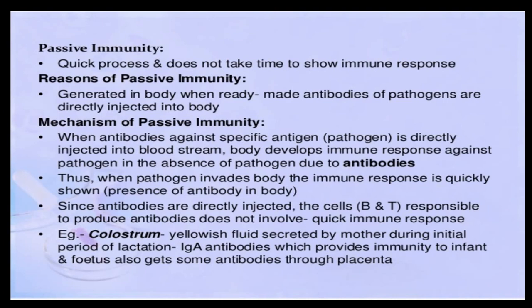Passive immunity is a very quick process and takes less time to show an effective response. It is generated when we inject ready-made antibodies specific to the pathogens. These antibodies are made outside the body and injected into the body. When specific antibodies against a pathogen are injected into the bloodstream, the body develops an immune response even in the absence of the pathogen. We do not require the pathogen, nor do we require B and T cells, because the antibodies are preformed outside — and that is why it gives a quick immune response.